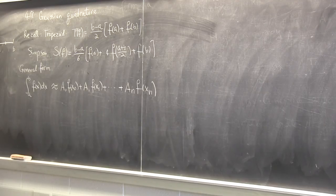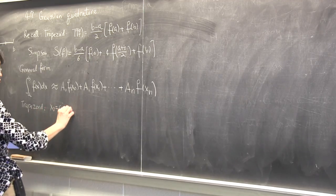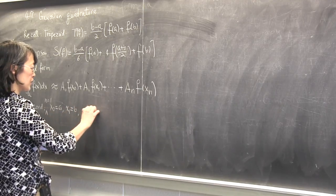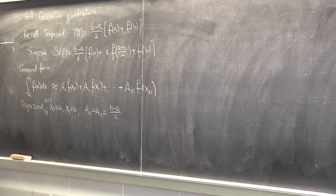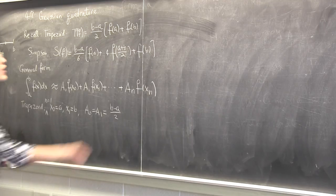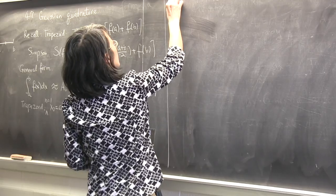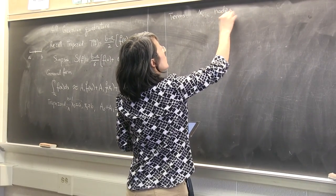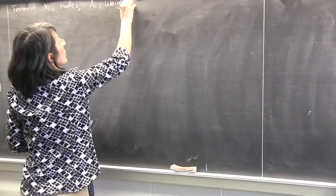For the trapezoid rule, n equals 1 and I have two points: x0 = a and x1 = b, with a0 = a1 = (b minus a)/2. We call the xi's the nodes, and the constants ai's are called weights.